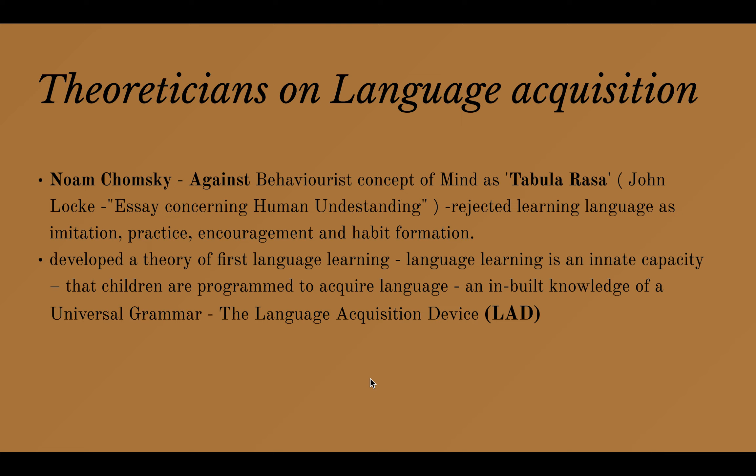One of the most important linguists is Noam Chomsky. He was against the behaviourist concept of mind as tabula rasa. Tabula rasa comes from John Locke's philosopher's essay concerning human understanding — a very important book. Tabula rasa means blank slate, or white sheet. The idea is that the mind is a completely blank thing, and that all knowledge, behaviour, and personality come from what we are taught as a child.